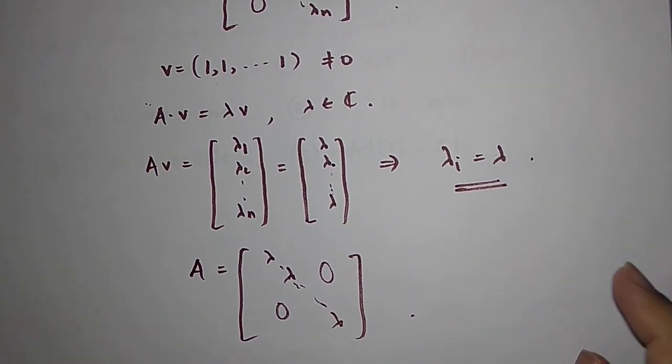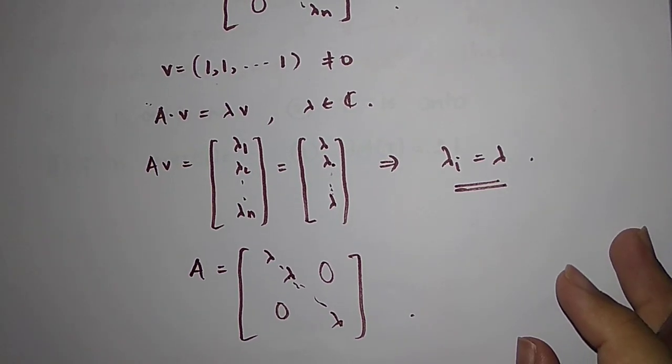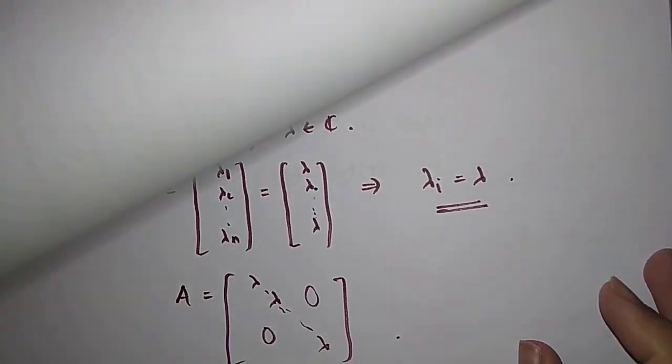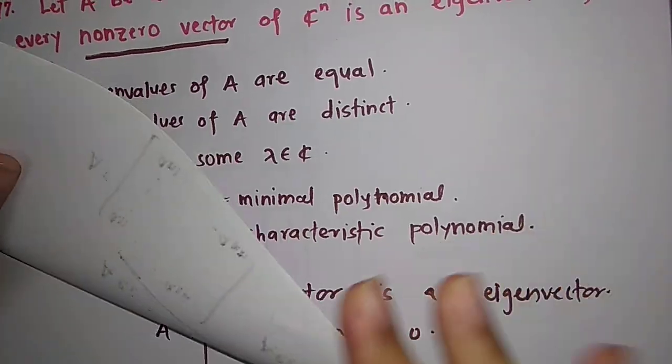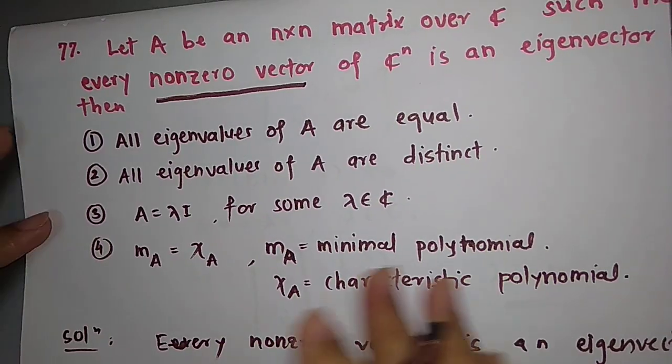Now let us come back to the problem. So what is the same? Since we have got that A to be a scalar matrix, let us check what are the options correct.